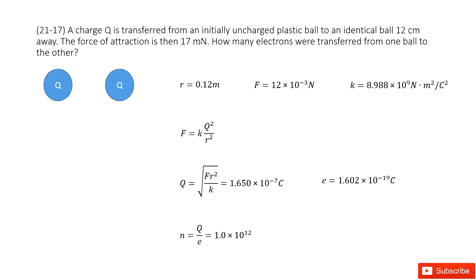So this one looks like we need to find how much charge is transferred. And then we can get it, we know the elementary charge of one electron. Then we can get the number of electrons. Looks like we need to find a charge Q at first.